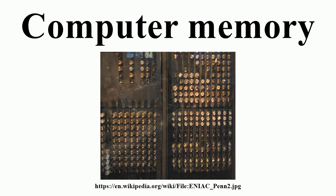The next significant advance in computer memory came with acoustic delay line memory, developed by J. Presper Eckert in the early 1940s. Through the construction of a glass tube filled with mercury and plugged at each end with a quartz crystal, delay lines could store bits of information in the form of sound waves propagating through mercury, with the quartz crystals acting as transducers to read and write bits. Delay line memory would be limited to a capacity of up to a few hundred thousand bits to remain efficient.